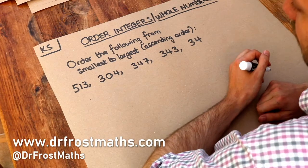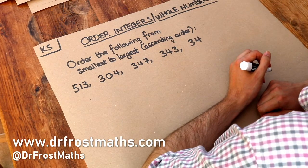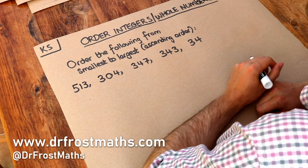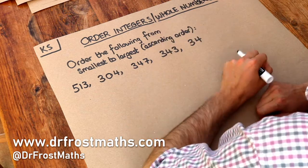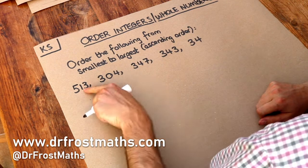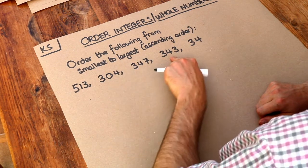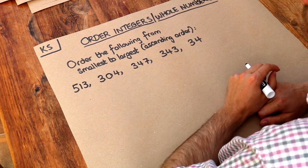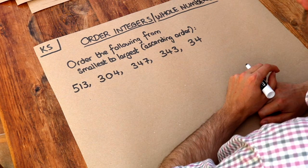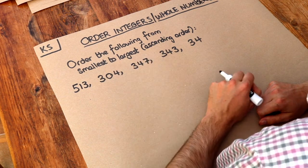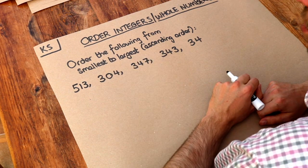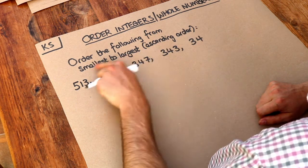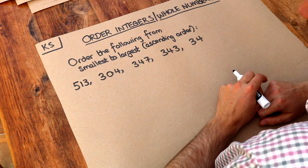Hello and welcome to this Dr Frost Maths key skill video on ordering whole numbers, also known as integers. We've got these different whole numbers and we want to put them in order from smallest to largest. This is also known as ascending order.